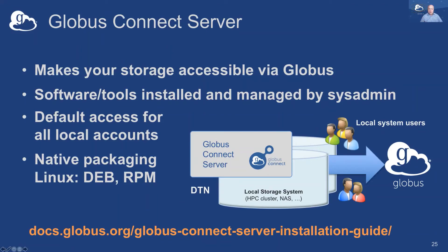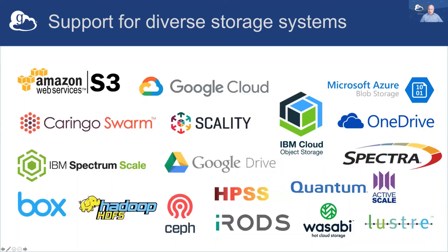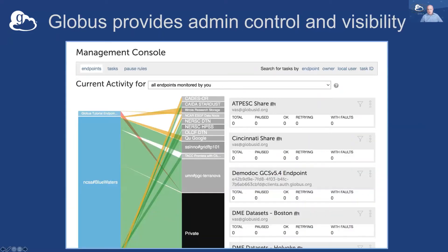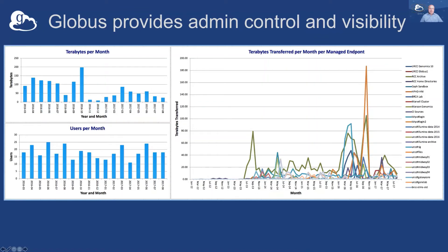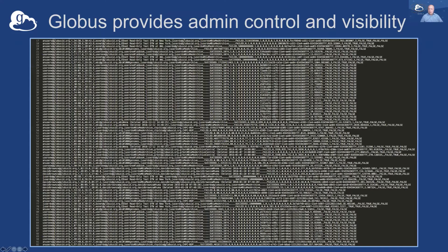We support many different types of systems — there's a current list of connectors available. Once your system is connected and users are doing things, you want administrative control and visibility. We have a real-time view showing who's doing what, what's being moved from where to where. You can drill down for troubleshooting. We also provide historical usage reporting so you can get a snapshot of activity over a time frame or get full detailed logs of all transfers.